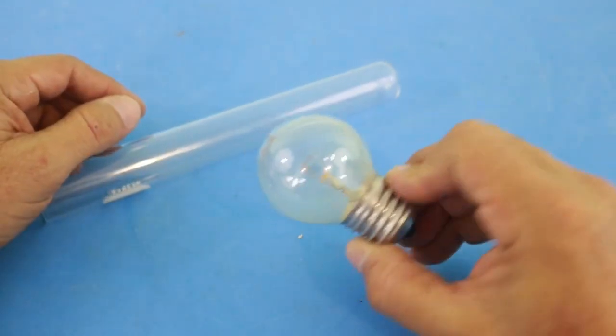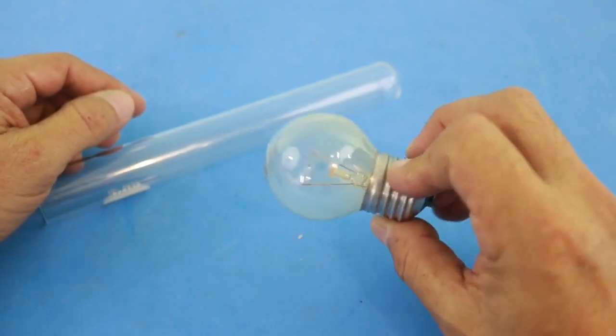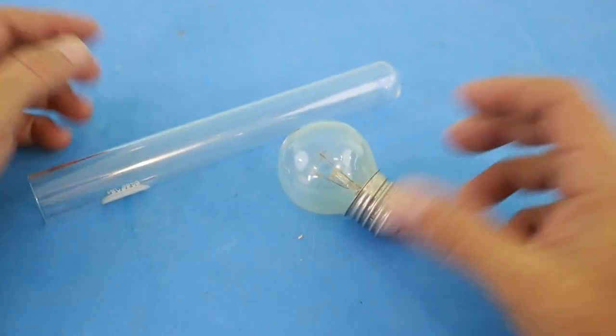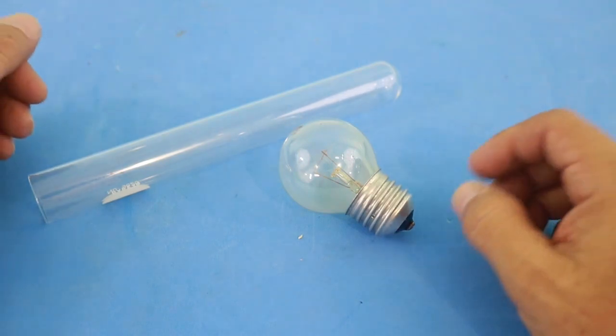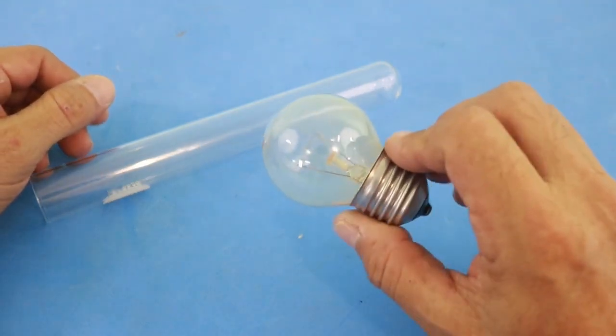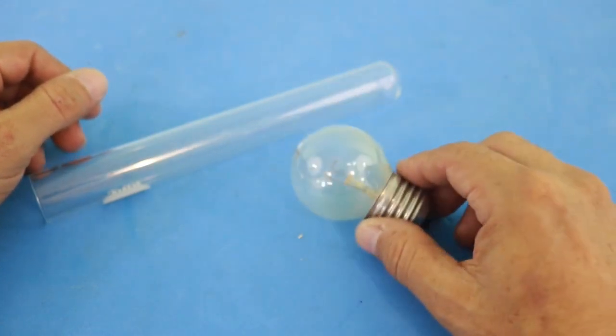So glass, which is a very good insulator at room temperature, becomes a conductor if the temperature is high enough, and that is what we will see in this video.